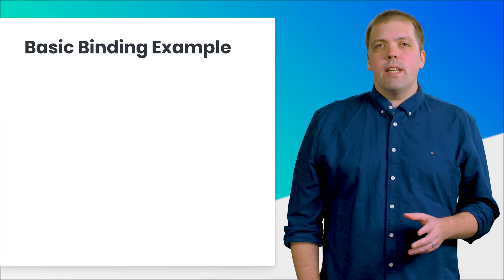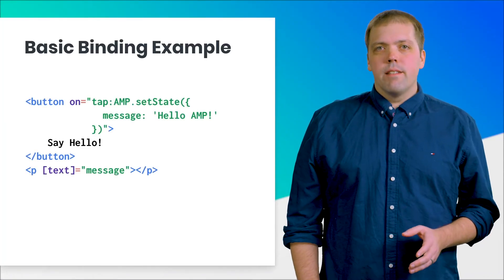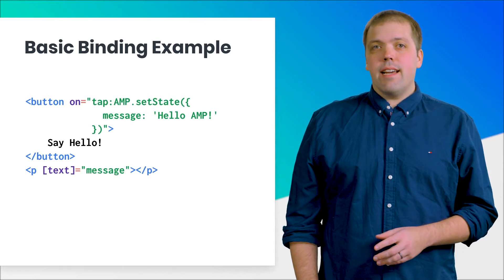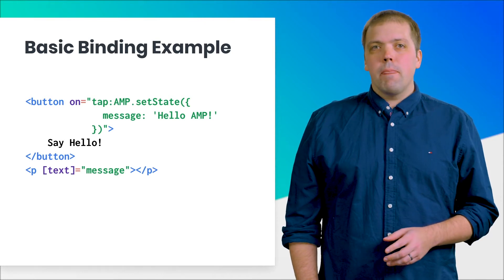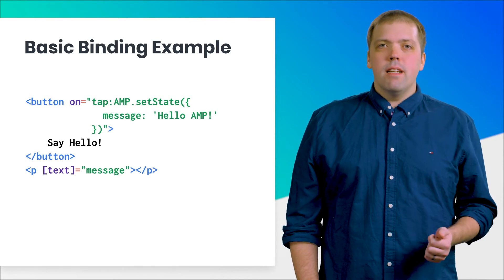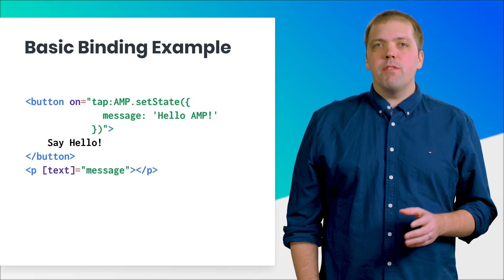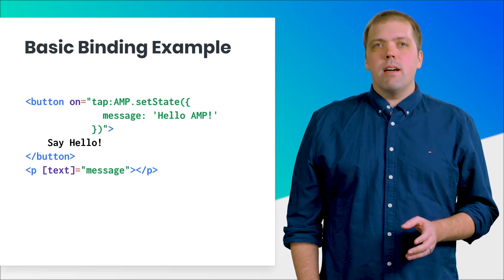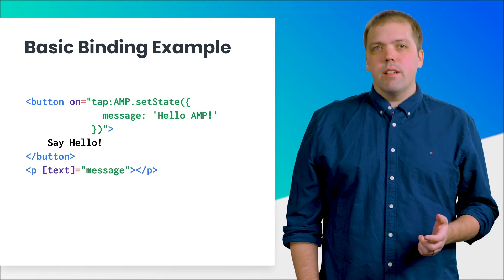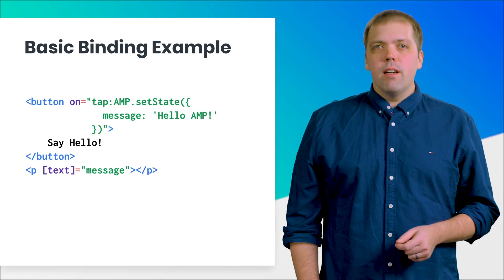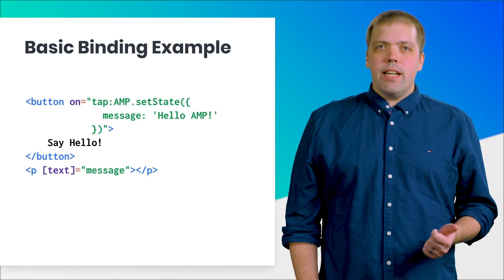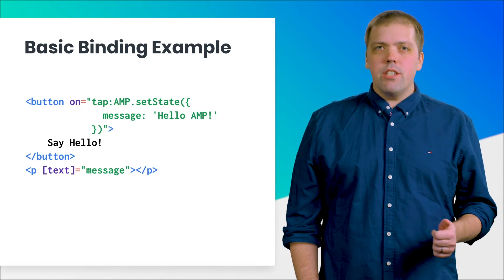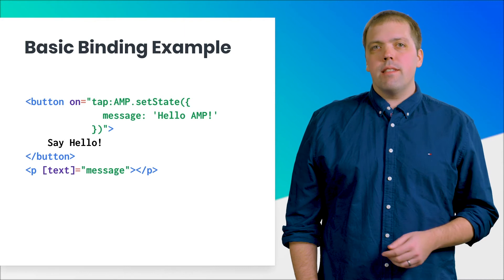Let's say we want to control an element's text. We can bind a state variable to its text attribute. In this example, text is the bound attribute of the paragraph tag. It is bound to the state variable message. Therefore, when message changes, the text content of the paragraph tag changes to match the new message.